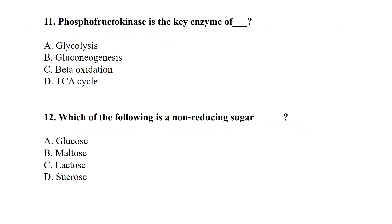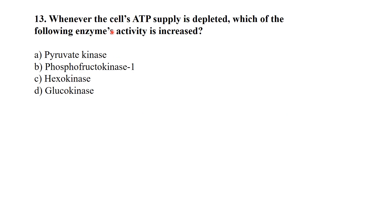Fructokinase is the key enzyme of the fructose pathway. Which of the following is a non-reducing sugar? Sucrose is a non-reducing sugar. Whenever the cell's ATP supply is depleted, which enzyme activity increases first? Fructokinase activity will increase first.